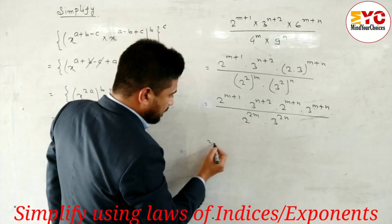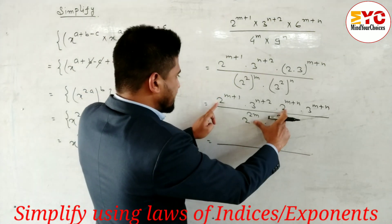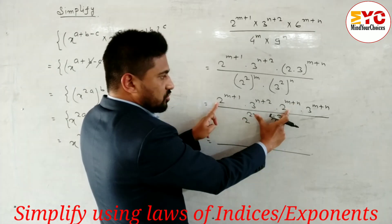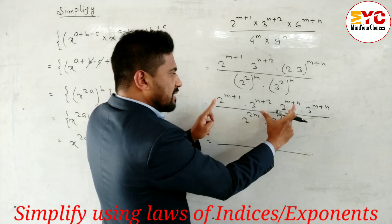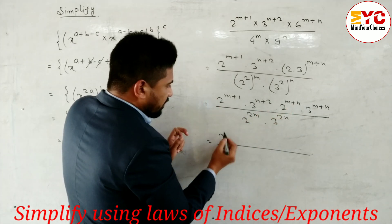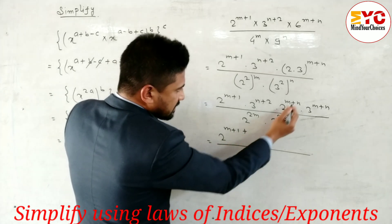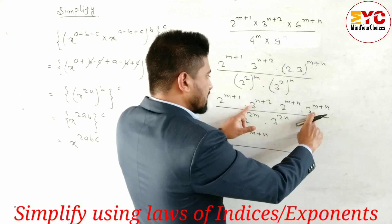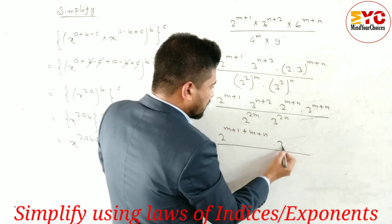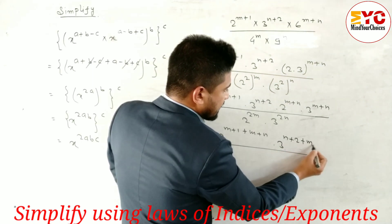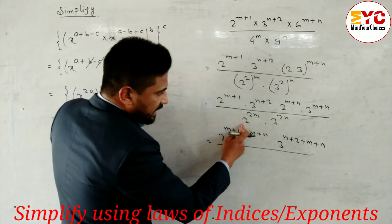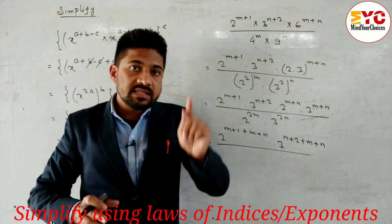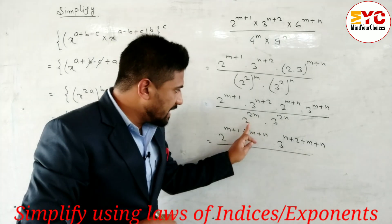Now you can see base same — 2 with 2 — in multiplication we have to add the powers. Taking only the base-2 terms, we add the powers: m+1 plus m+n. Similarly base same for 3 — in multiplication we add the powers for the base-3 terms: n+2 plus m+n. To add or subtract powers the bases must be the same.